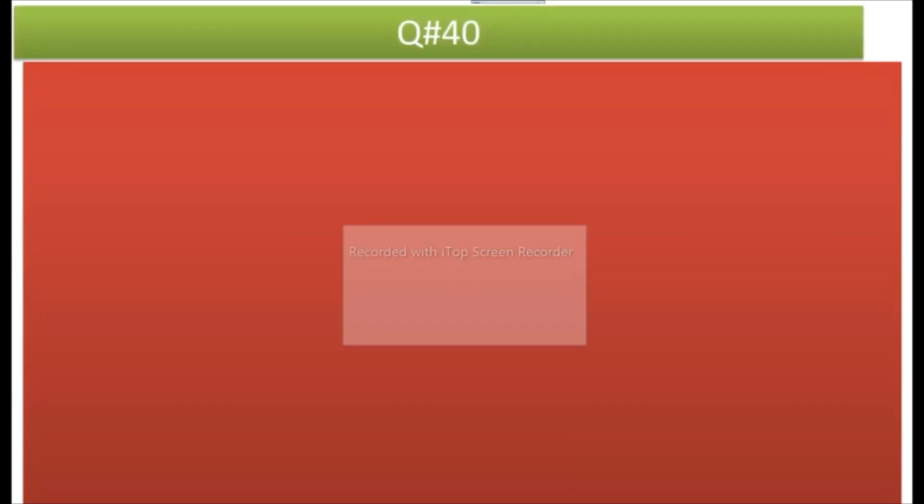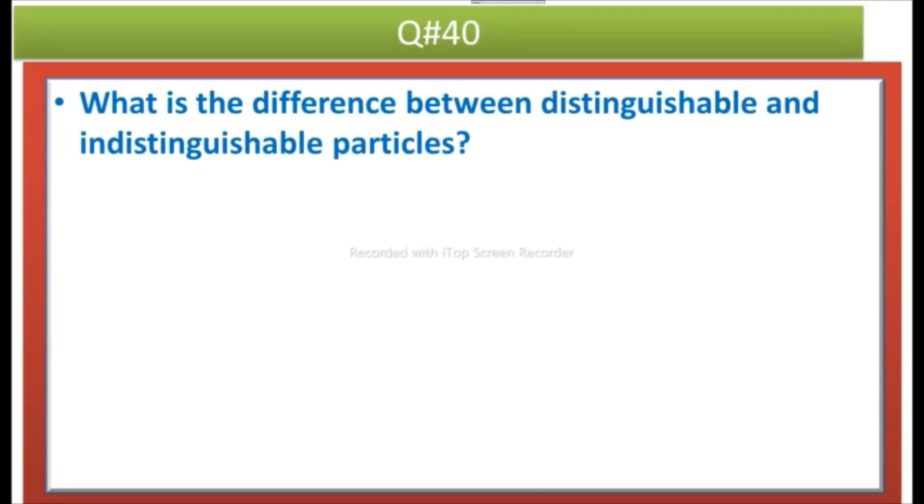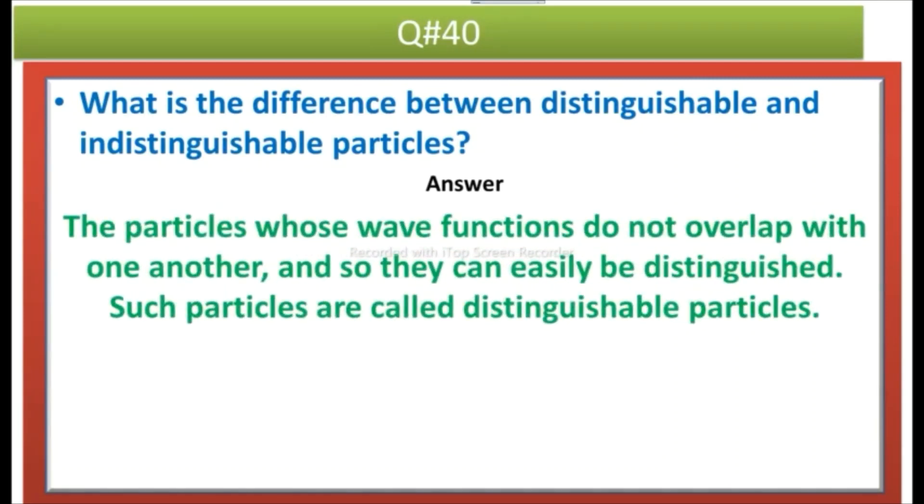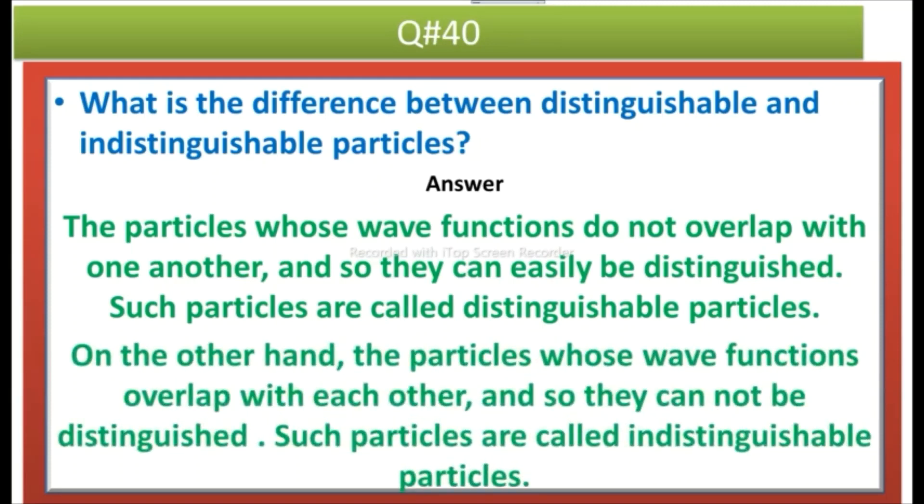The next question is what is the difference between distinguishable and indistinguishable particles? Answer is the particles whose wave functions do not overlap with one another and so they can easily be distinguished, such particles are called distinguishable particles. On the other hand, the particles whose wave functions overlap with each other and so they cannot be distinguished, such particles are called indistinguishable particles. Of course you know distinguishable particles are discussed in classical mechanics, whereas indistinguishable particles are discussed in quantum mechanics.